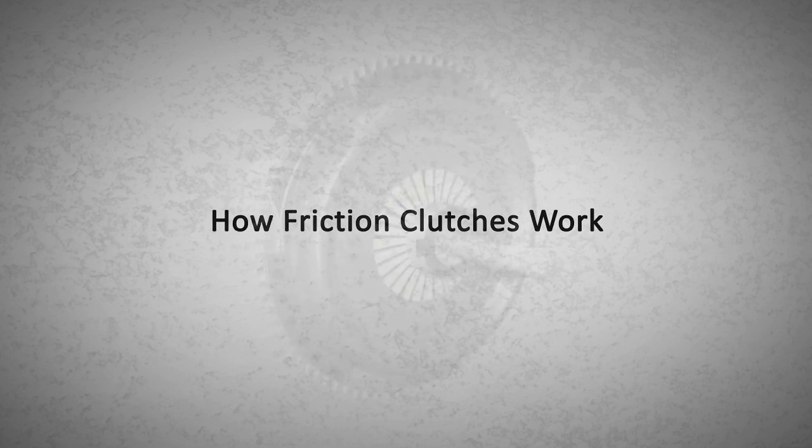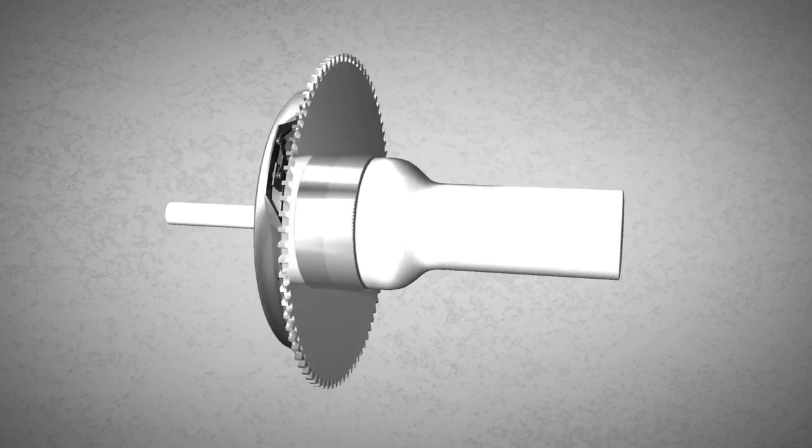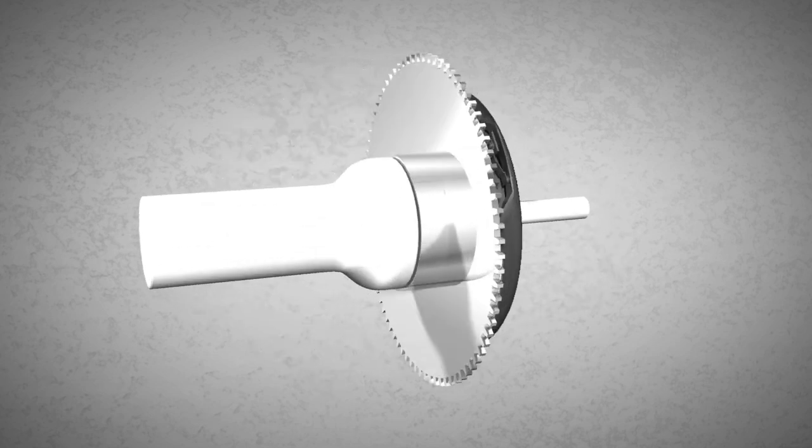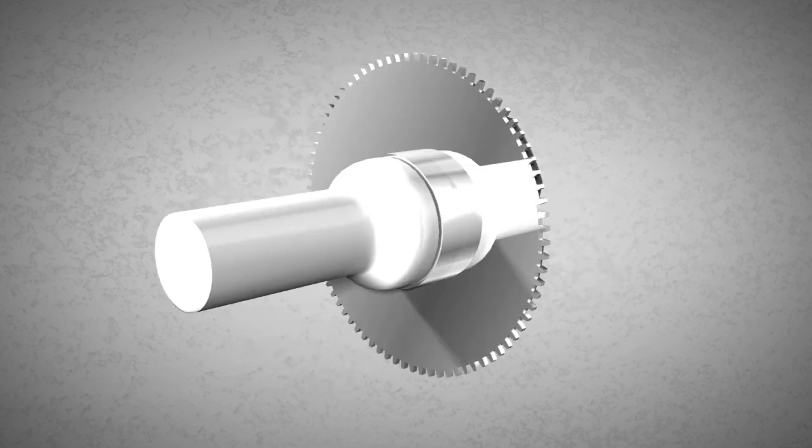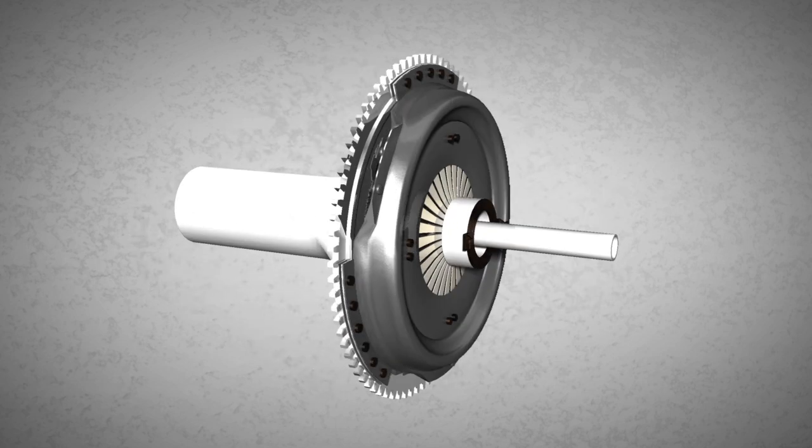Vehicles of today normally use a clutch to transmit power produced by the engine to the gearbox. The vast majority of cars and motorcycles rely on dry friction clutches, which will be explained in this animation.